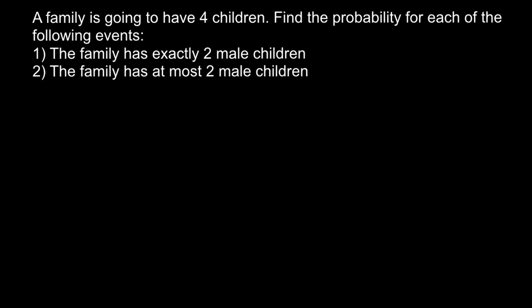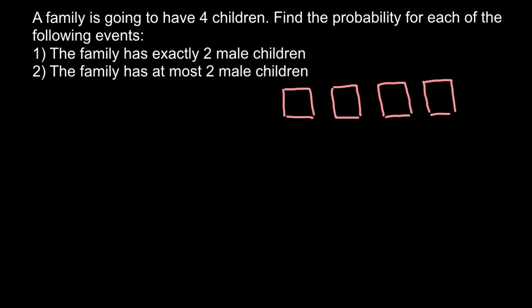Let's first find how many combinations we may have. We have four children, and I'll represent them with four empty boxes. Each empty box represents an event — the birth of a child. The first box represents the first child, the second box the second child, and so on through the fourth child.